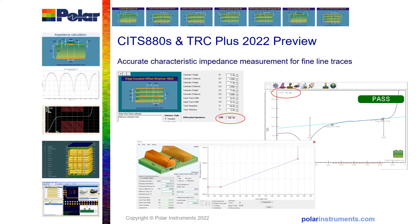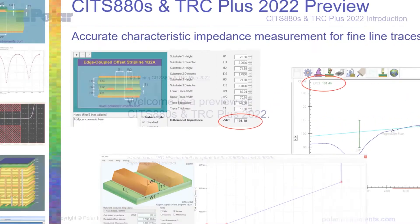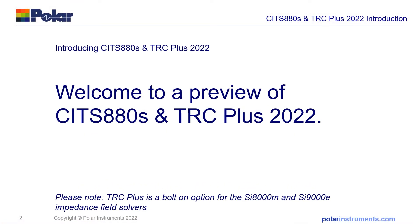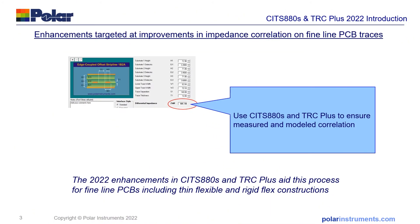This brief video is designed to introduce you to making accurate characteristic impedance measurements on fine line PCB traces. Included in the video is a preview of the SITS 880S version 22 and the TRC Plus, which is an option for the SI8000 and SI9000 impedance field solvers. The enhancements in the SITS 880S and the TRC Plus are designed to improve impedance correlation when measuring on fine line PCB traces, ensuring measured and modeled correlation.